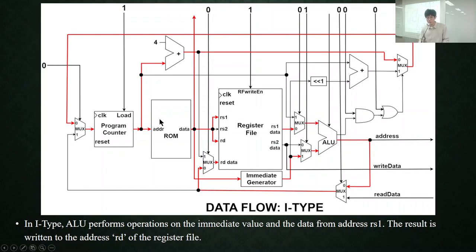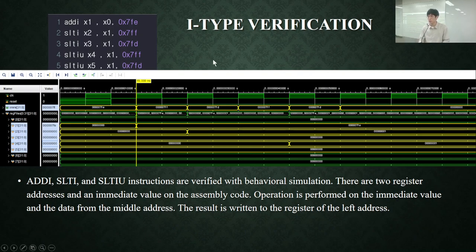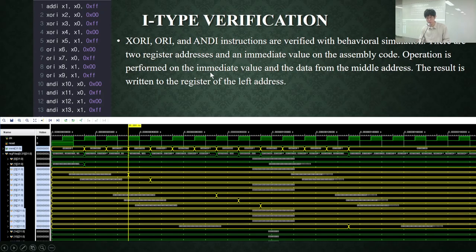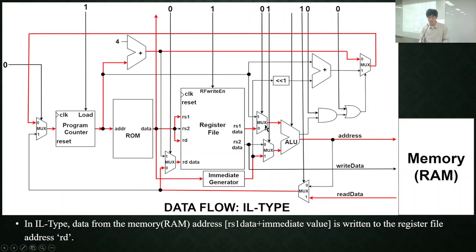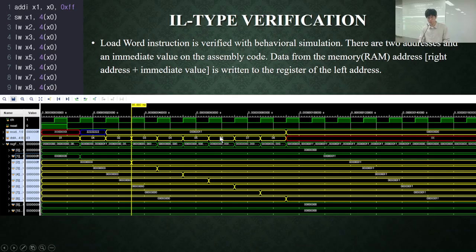This shows the data flow of I-type instructions. RS1 data and the immediate value goes to ALU and the result goes back to the register file. This is the simulation result of load word instruction. This is conveyed to the memory as its address, and data at that address is written to the register file.